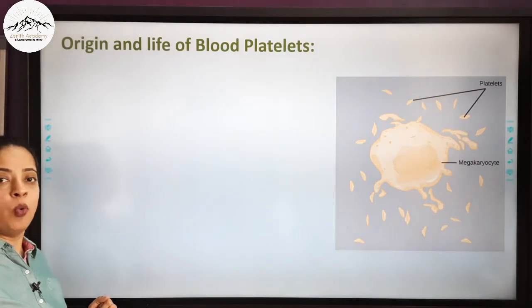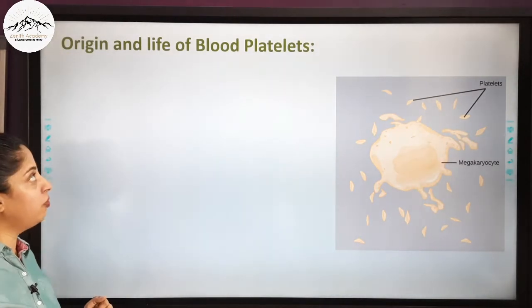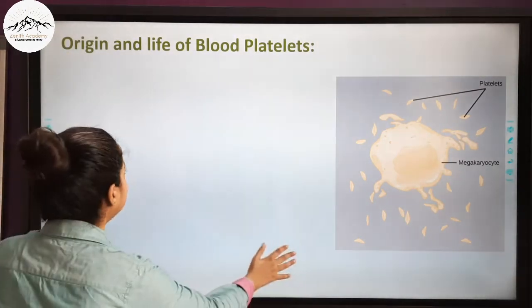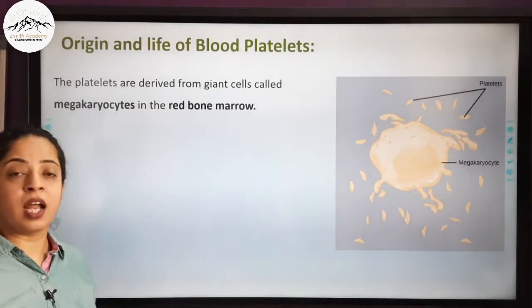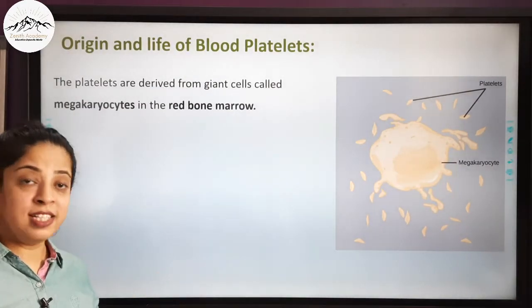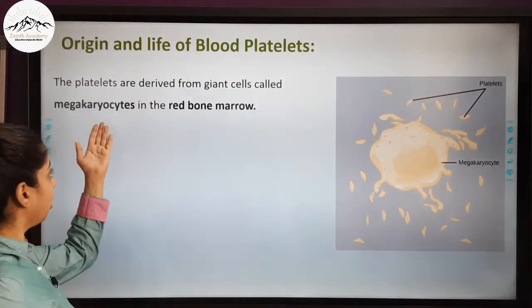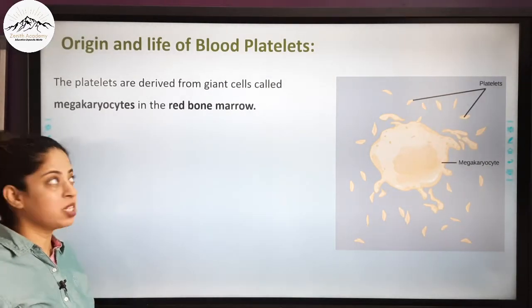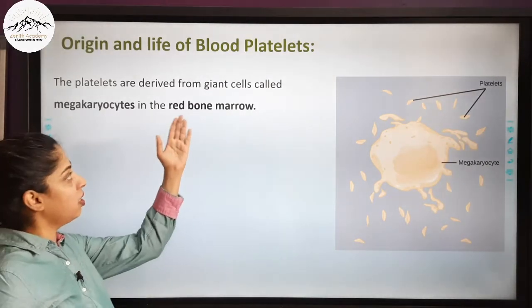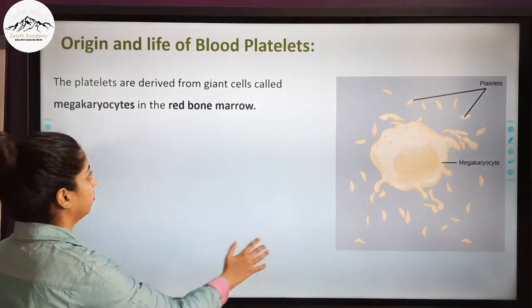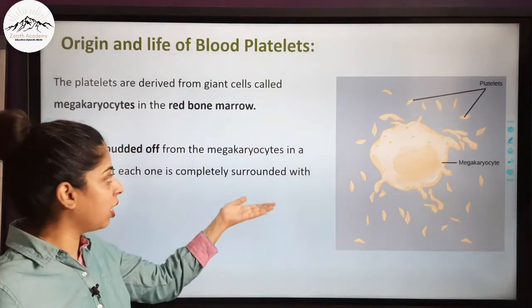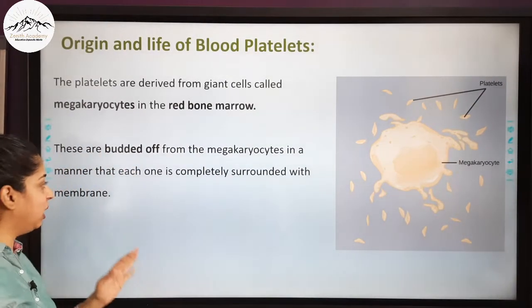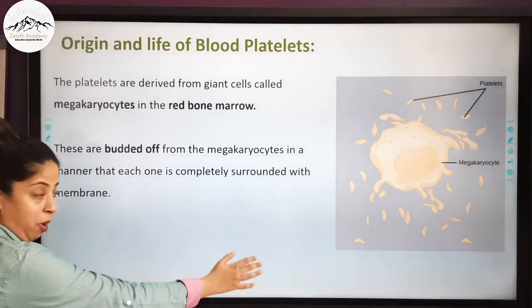Now let us study the origin and life cycle of blood platelets. The platelets are derived from giant cells known as megakaryocytes, which are present in the red bone marrow.